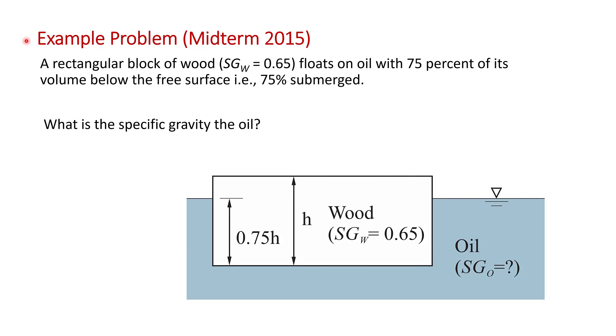And it says that we have a rectangular block of wood that's floating in some oil. The specific gravity of the wood is 0.65. Wood generally floats on water, so it has a specific gravity less than one. That makes sense.